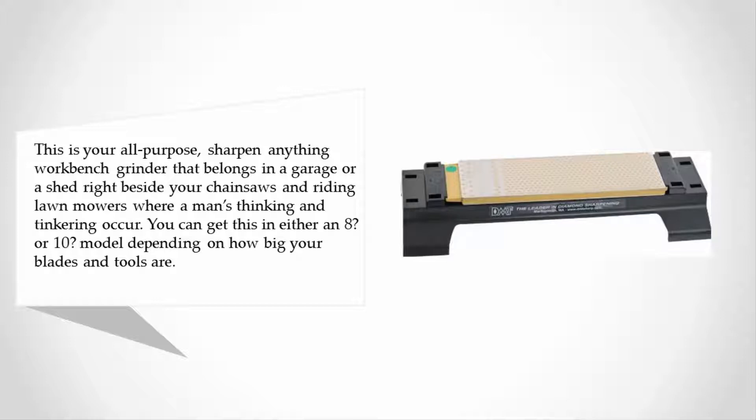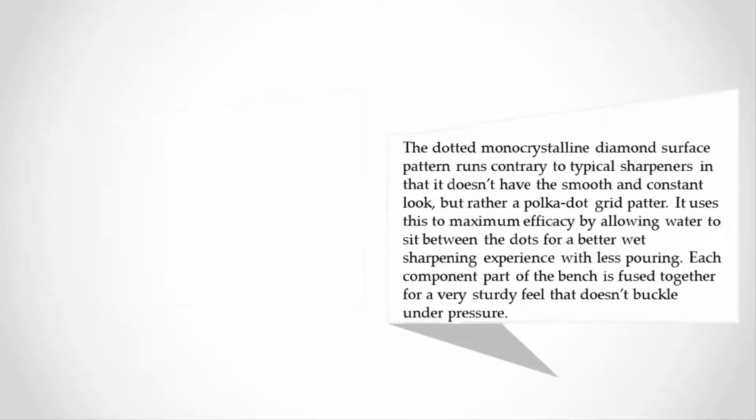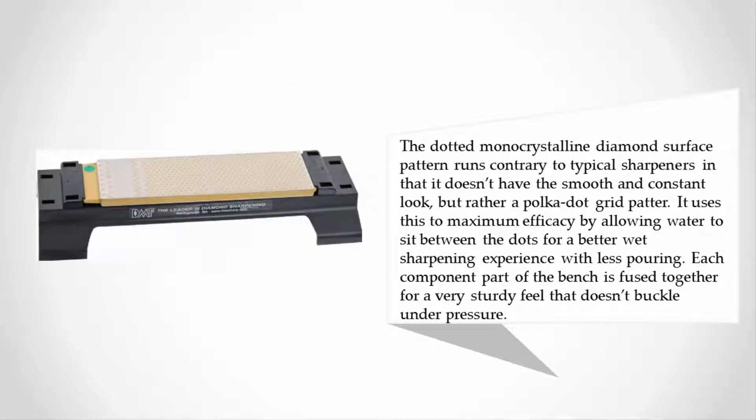The dotted monocrystalline diamond surface pattern runs contrary to typical sharpeners in that it doesn't have the smooth and constant look, but rather a polka dot grid pattern. It uses this to maximum efficacy by allowing water to sit between the dots for a better wet sharpening experience with less pouring. Each component part of the bench is fused together for a very sturdy feel that doesn't buckle under pressure.